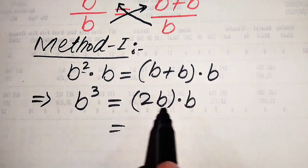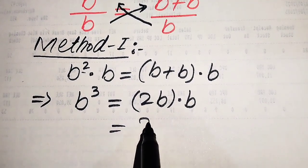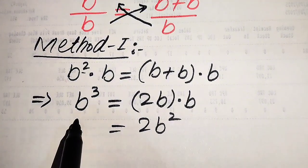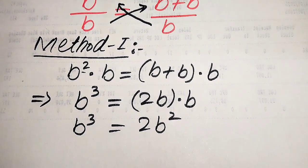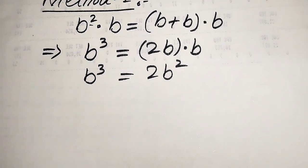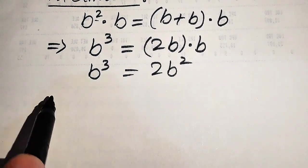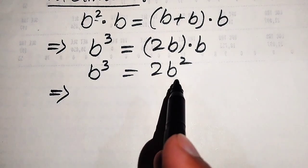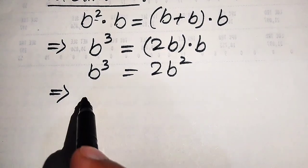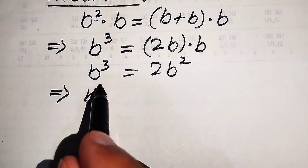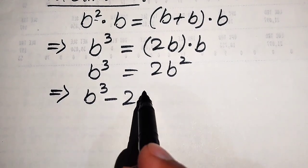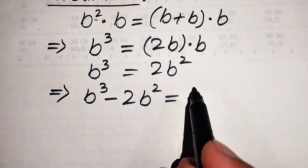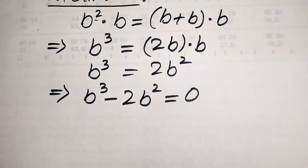So we get 2b multiplied by b equals 2b squared. This is the value of b cubed. In the next step, we move 2b squared from the right hand side to the left hand side, and it becomes b cubed minus 2b squared equals 0.